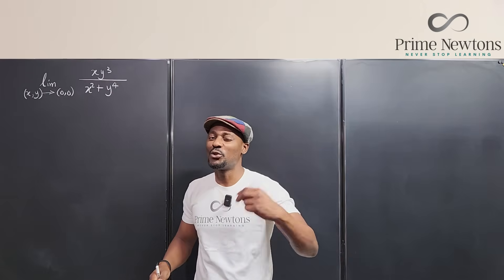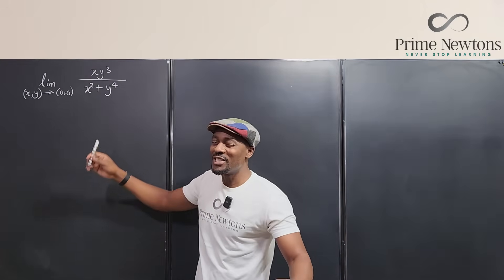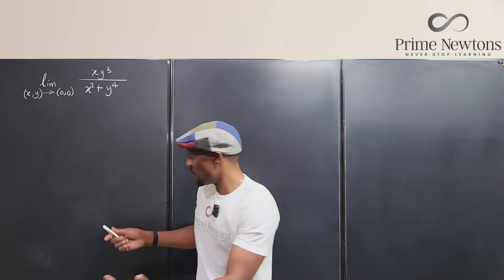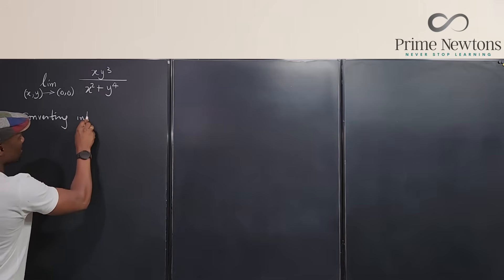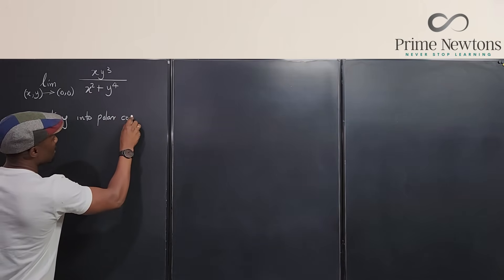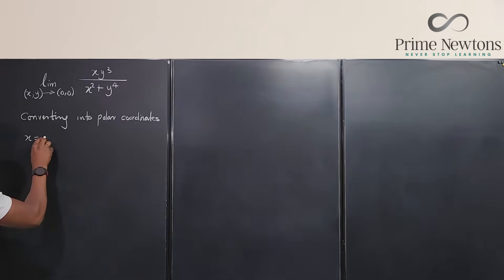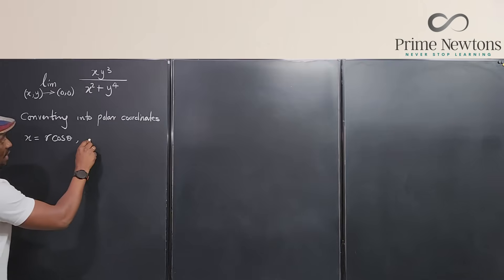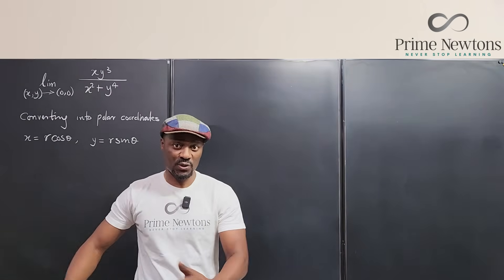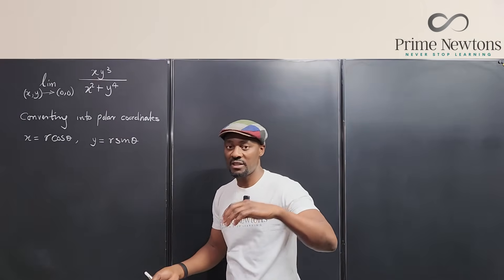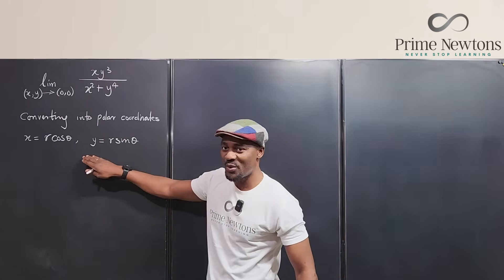You don't need to try different paths, because it's possible to say 'what if x equals y' and try it — but it fails. So instead of trying different paths, just go straight to polar coordinates. Converting into polar coordinates, we know that x equals r cosine theta and y equals r sine theta. This is from pre-calculus or trig — switching from rectangular to polar coordinates.